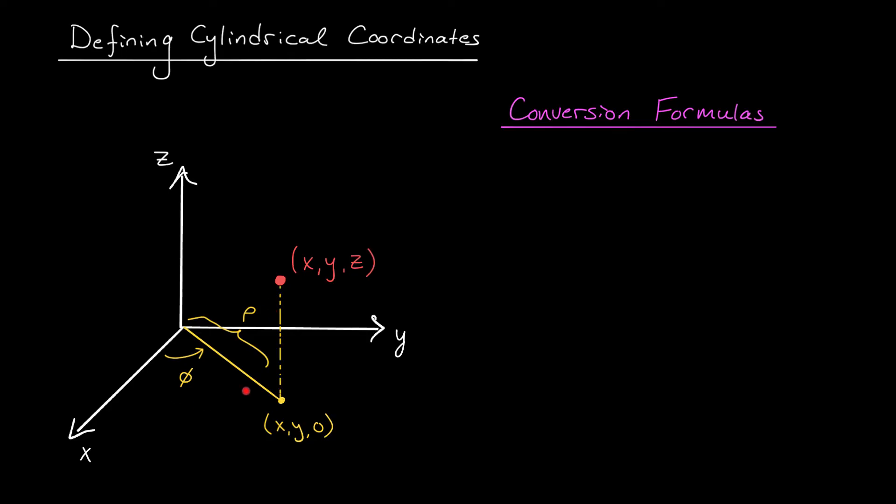Of course, rho and phi alone don't tell us anything about the height of our original point, so we still keep our z component. The cylindrical coordinates of our original point are (rho, phi, z). Knowing these three pieces of information is enough to determine the location of our point.